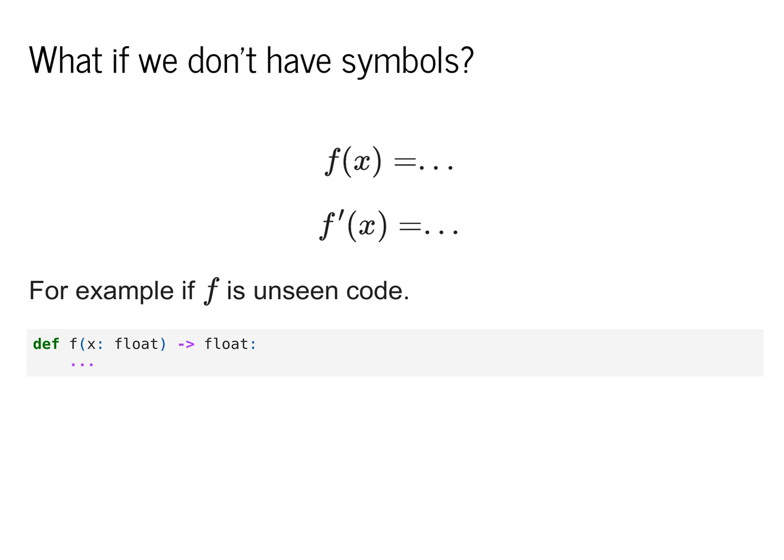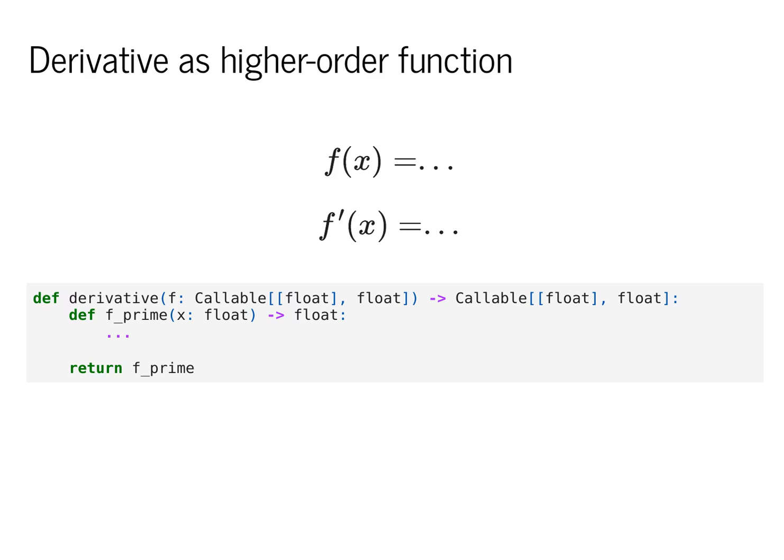For example, we'll have a function f of x and let's say that f of x is unseen code. We're able to run it, but we can't look inside it. Our goal will be to compute f prime and f prime just has to take some input x and return a value of the derivative for f of x. In this notation, we're thinking of f prime as acting as a higher order function. So we're going to assume that we have a function called derivative and it can take in f, which is a function from floats to floats, and it's going to return a new function f prime which also maps from floats to floats. We'll define this as an inner function f prime and our goal is to implement it in an accurate manner. So here we're just implementing the prime notation in Python code.